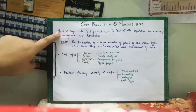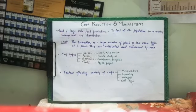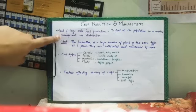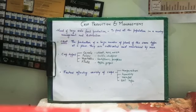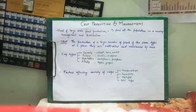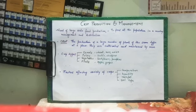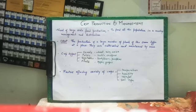The need for large-scale food production is because we need to feed all the population in a country. The management and distribution of food is also important, since if we are producing a resource, proper transport and supply of that resource — the crops or the food — is necessary so that it reaches all of the population for which it is being produced.